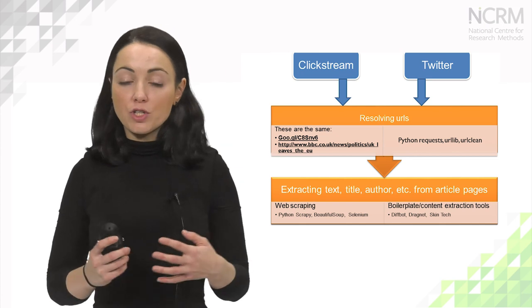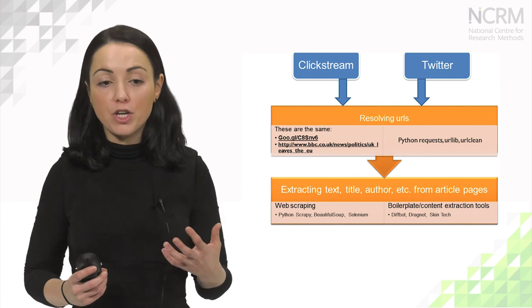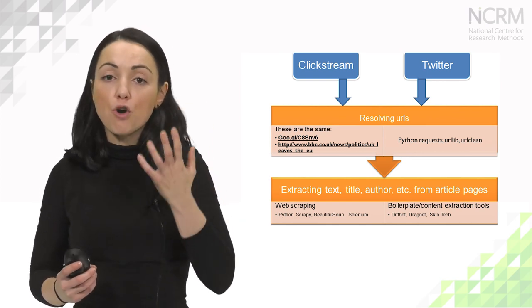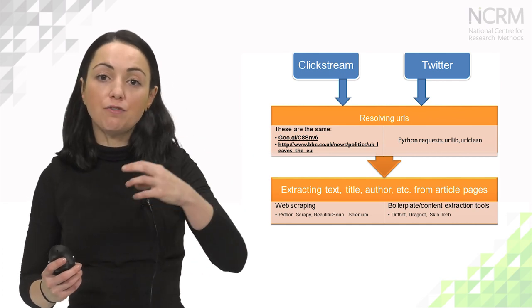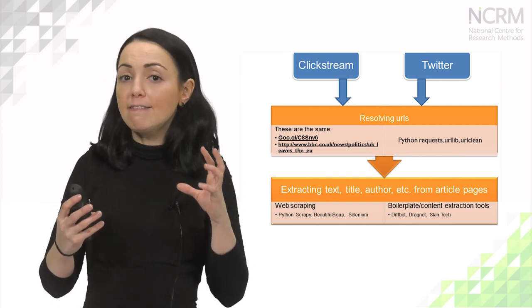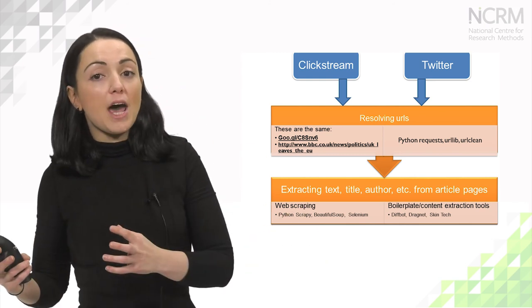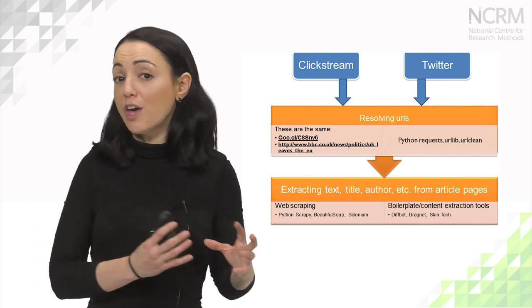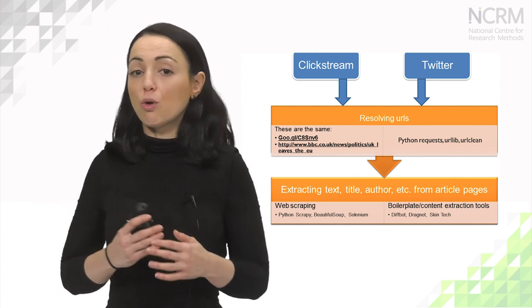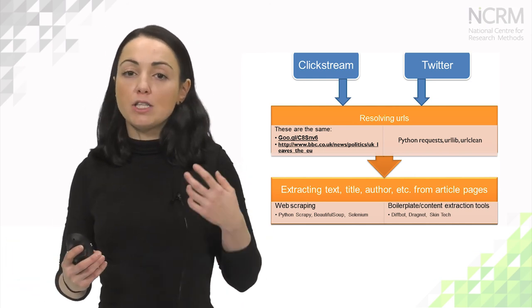Once we have a single link corresponding to the article of interest, we need to extract from that article the text, title, author, and other relevant information. We can do that by using web scraping — visiting the page and scraping content into a database. However, this is a lengthy process and since most websites don't have identical structures, we would have to do it for all 460 domains. So we outsource that to a boilerplate or content extraction tool called DiffBot. Other tools such as Dragnet or Skintag also exist. We use DiffBot because it is one of the most popular.